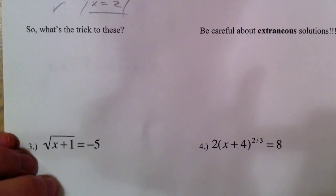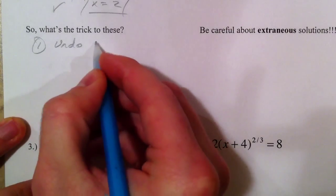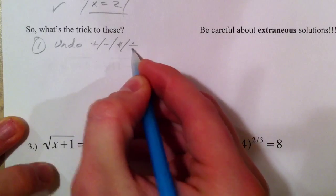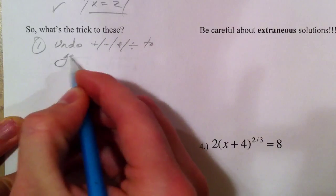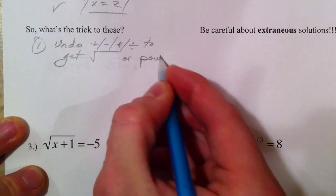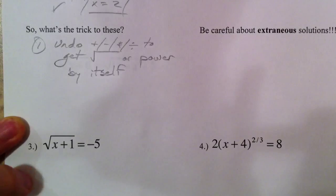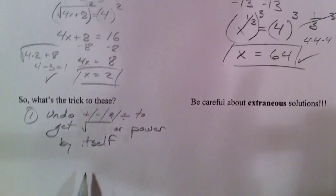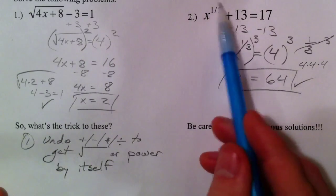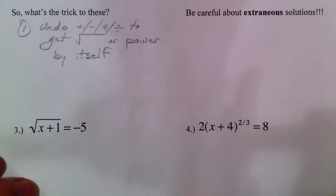Well, we've got to undo the operations, undo the pluses, the minuses, the multiplication, the division, to get the square root or the power by itself. So we got, in our first one, we got our square root by itself first by adding the 3, and same thing in the second one, we subtracted 13 to get the power by itself. And then the rest of it's sort of trapped underneath.